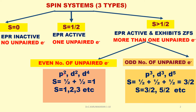For D2, S equals 1/2 plus 1/2 equals 1. For D4, S equals 2. So S can equal 1, 2, 3, etc. for even numbers of unpaired electrons. For odd number of unpaired electrons, examples are P3, D3, D5 configurations.